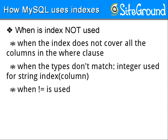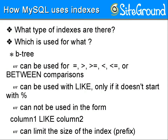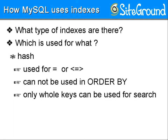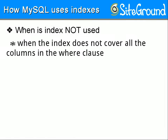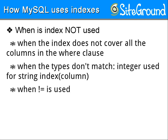People think they've created an index and their query will use it, but then they use NOT EQUAL. When you use NOT EQUAL, you cannot use any index at all — except hash indexes with NOT EQUAL in limited cases. Everything else cannot be used with NOT EQUAL. When the MySQL optimizer sees NOT EQUAL in your WHERE clause, it dumps all indexes and goes to filesort and full table scan.